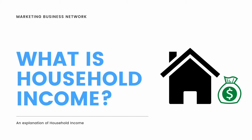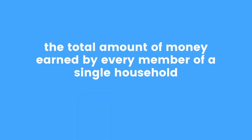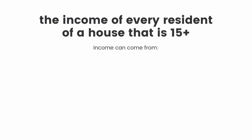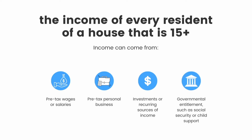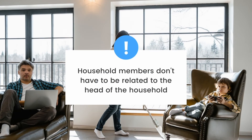What is household income? Household income refers to the total amount of money earned by every member of a single household. It includes the income of every resident of a house that is over the age of 15. Income can come from pre-tax wages or salaries, pre-tax personal business, investments or other sources of recurring income, and government entitlements such as child support or social security. Note that household members don't necessarily have to be related to the head of the household.